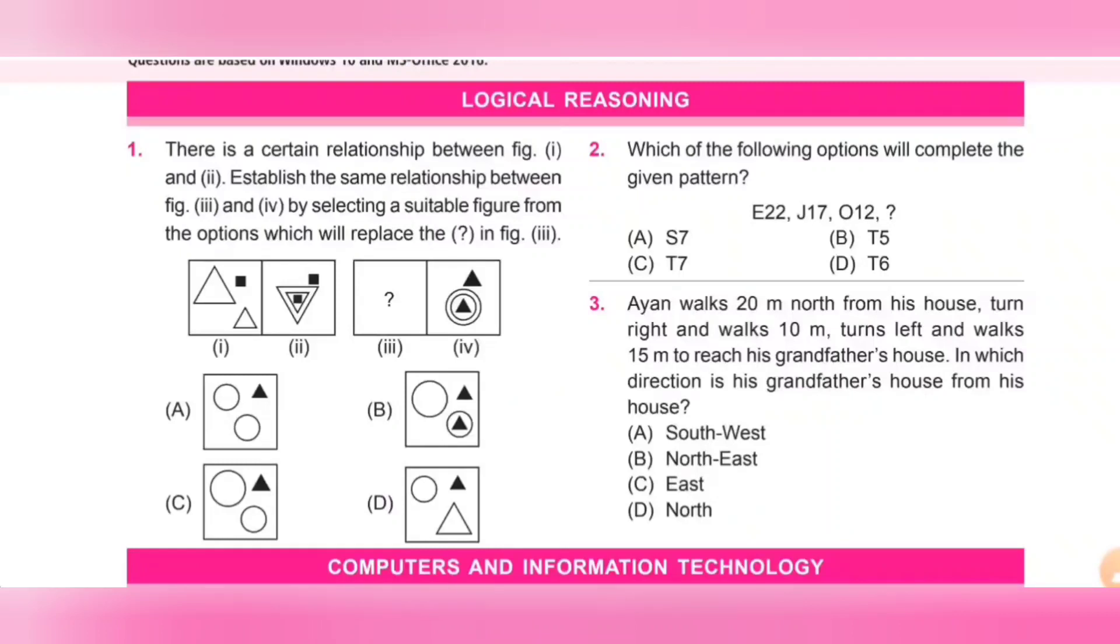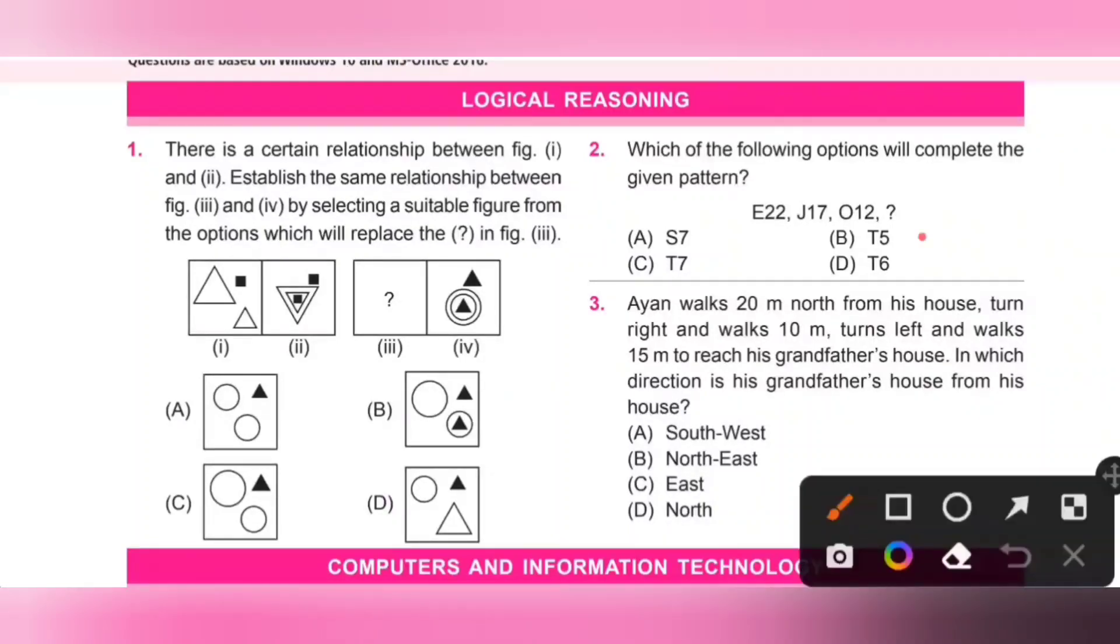After E: F, G, H, I, then J. Next J: K, L, M, N. Next O. Similarly P, Q, R, S, then T. So either option B or C will come. Similarly, 22 minus 5 is 17, 17 minus 5 is 12, so 12 minus 5 is 7. Option C is the correct answer.